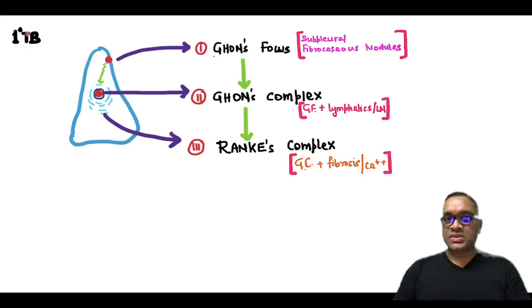So in primary tuberculosis, if you look at the cut section of the lung, and this is the pleura, subpleural fibrocaseous nodule will be seen, and these are called as Ghon's focus. So what are these Ghon's focus? Subpleural fibrocaseous nodule.